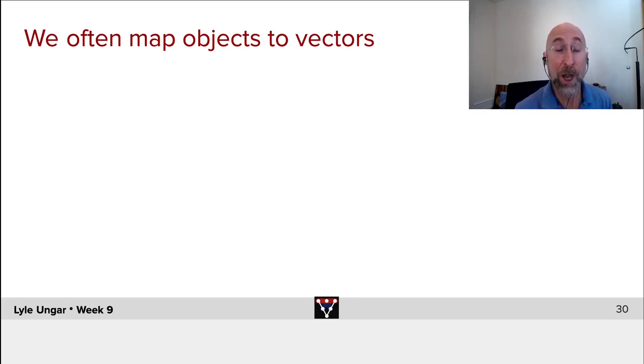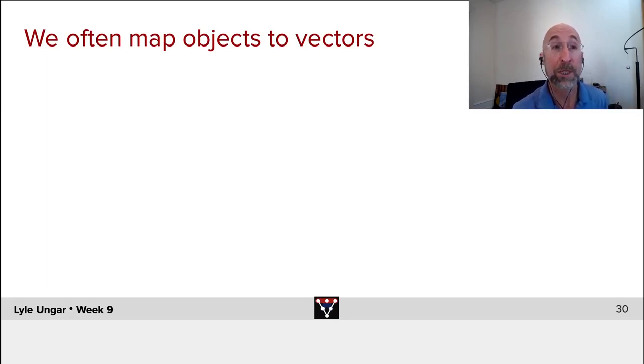Now, there are lots of things, objects, things we might want to map to a vector, so we can take it as an input to a standard neural net or to a recurrent neural net.